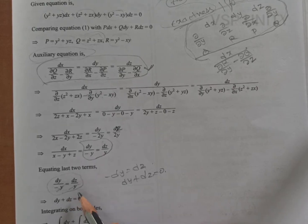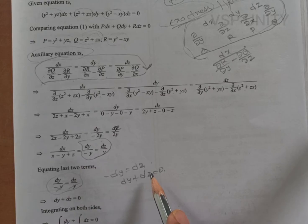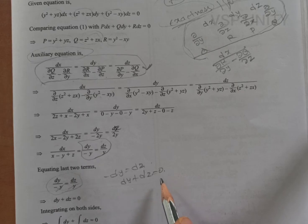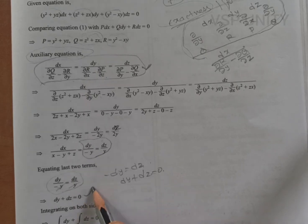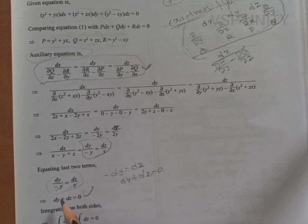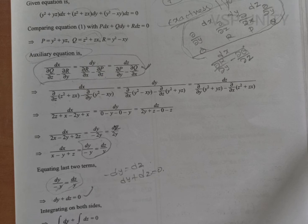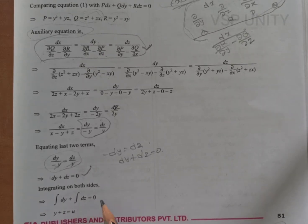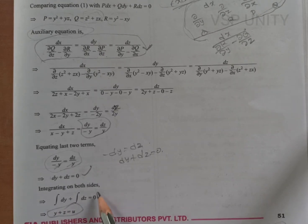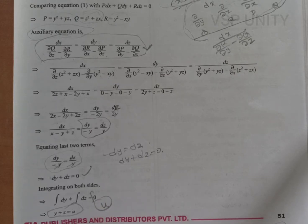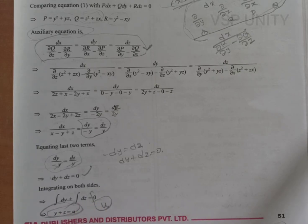Integrating both sides: ∫dy + ∫dz = 0, giving y + z = constant. We call this constant u. So the first expression is y + z = u.